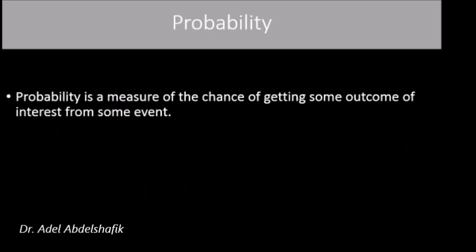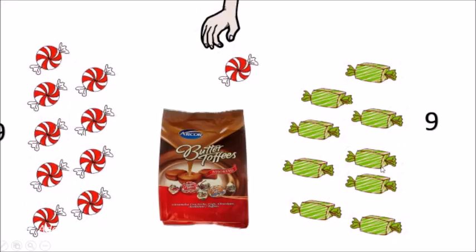Probability is a measure of the chance of getting some outcome of interest for some event. For example, suppose we have a bag of candies: nine are red and nine are green. What is the probability of getting one red?